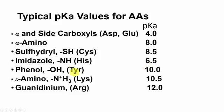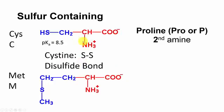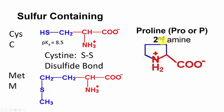Typical pKa values: aspartic/glutamic acid carboxyls are 4; alpha amino group is 8; sulfhydryl is 8.5; imidazole is 6.5; phenolic OH is 10; epsilon amino of lysine is 10.5; guanidinium of arginine is 12. You don't have to memorize all of these, but know approximately what they are. Cysteine has a sulfhydryl group and can form disulfide bonds. Methionine also has a sulfur. Proline is the only secondary amine — its nitrogen is in a five-membered ring connected back to the alpha carbon, making it still an alpha amino alpha carboxylic acid despite its unusual ring structure.